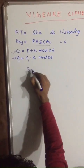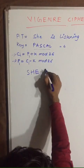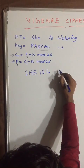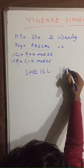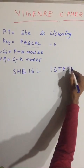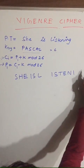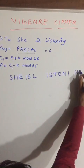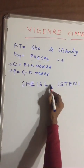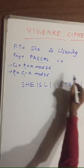You have to divide the plaintext into blocks of 6 characters each, according to the key length. The first block is S-H-E-I-S-N, the second block is I-S-T-E-N-I, and the last block is N-G. So you have divided the plaintext into different blocks according to the length of the key.